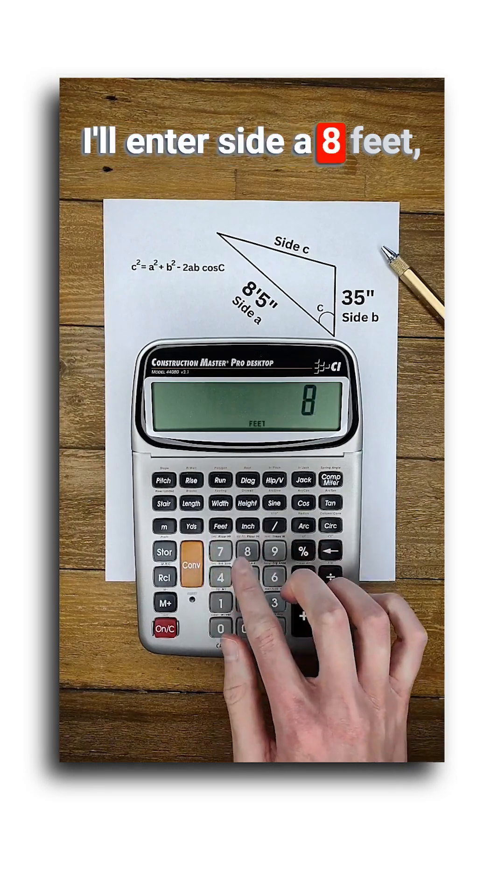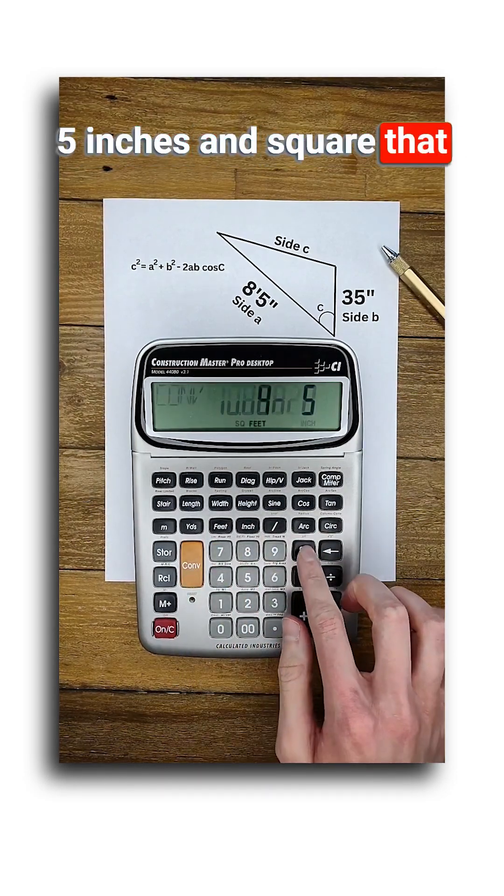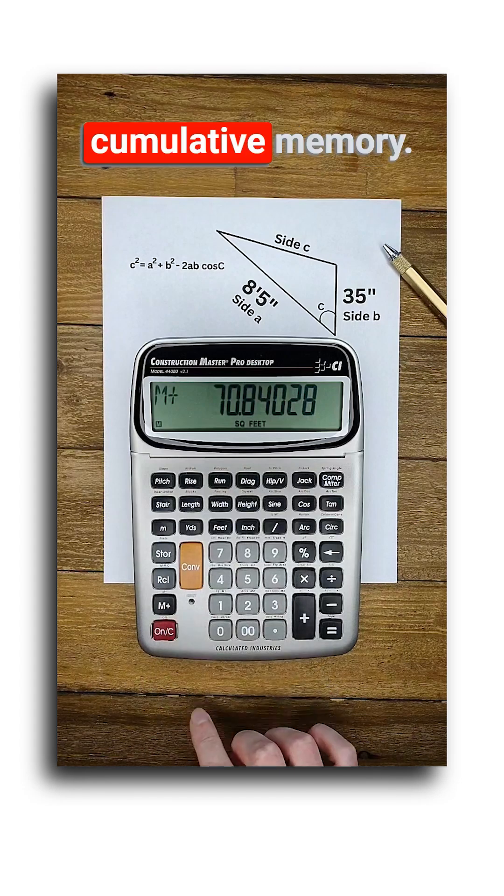First I'll enter side A, 8 feet 5 inches, and square that by pushing convert percent and store that in cumulative memory.